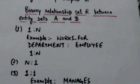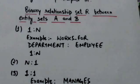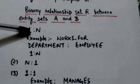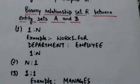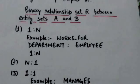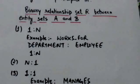For a binary relationship set R between entity sets A and B, the cardinality ratio must be one of the following. First is 1 to N. In this case, an entity in A is associated with any number of entities in B, and an entity in B can be associated with at most one entity in A.